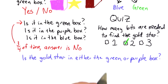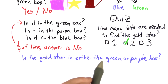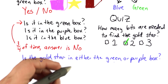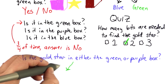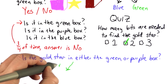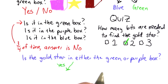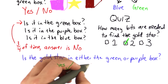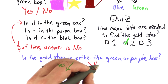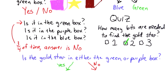The answer is yes if it's in one of those two boxes, and no if it's in either the blue or the red box. There are four boxes — for two of them the answer is yes, so half the time the answer is yes. That means we're gaining one full bit of information. If the answer is yes, we've learned it's in either the green or the purple box. If the answer is no, we've learned it's in either the blue or the red box.